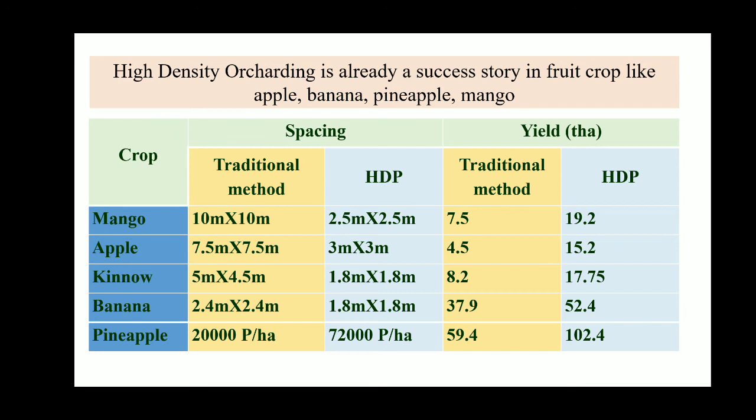High density planting orchard already has a success story in fruit crops like apple, banana, pineapple, and mango. For mango, the traditional spacing is 10×10 or 7.5×7.5 meters. With HDP spacing of 2.5×2.5 meters in mango, under traditional spacing the yield is 7.5 tons per hectare, but with HDP at 2.5×2.5 meter spacing the yield can be 19.2 tons per hectare — a very attractive figure that will be very economical for farmers.